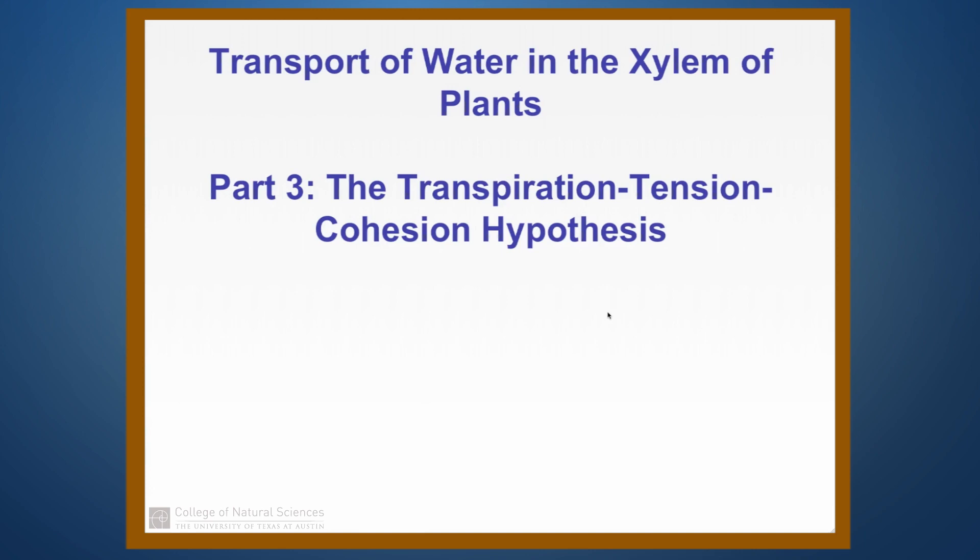This is the final of the three parts on the transport of water in the xylem of plants. In this part, we'll be talking about the transpiration-tension-cohesion hypothesis for how water gets transported from the roots of a tall tree all the way up to the highest leaves in that tree.